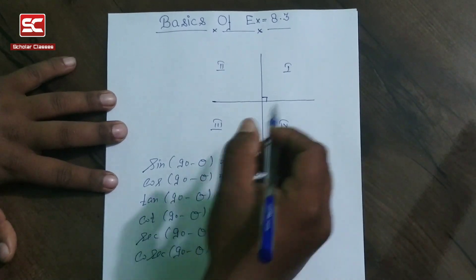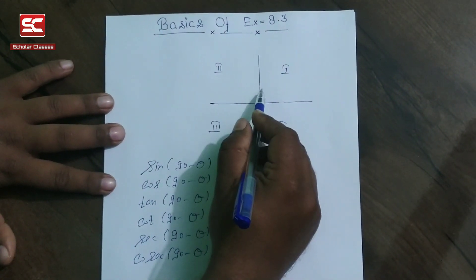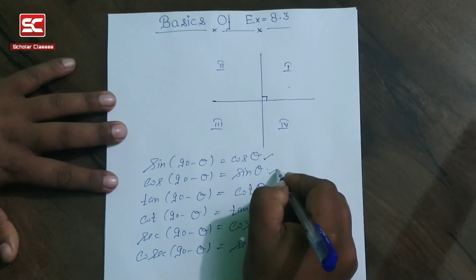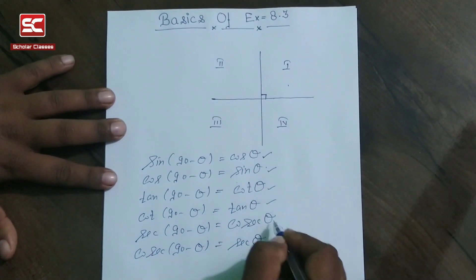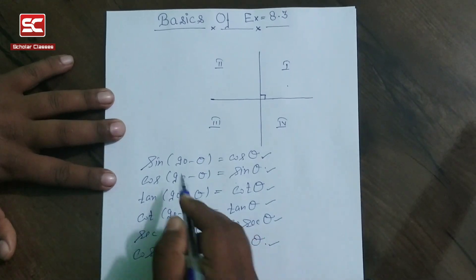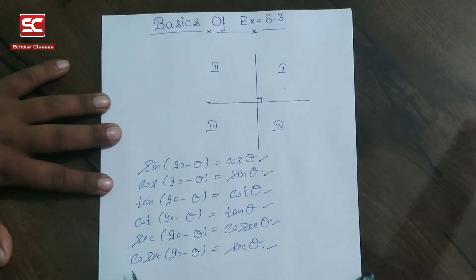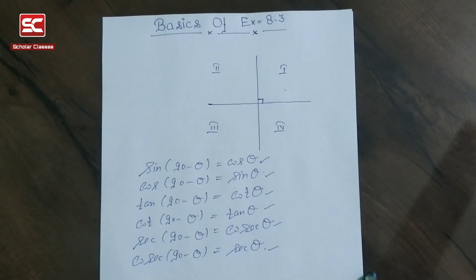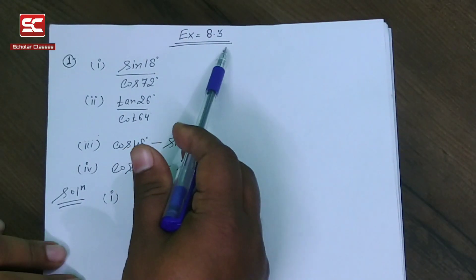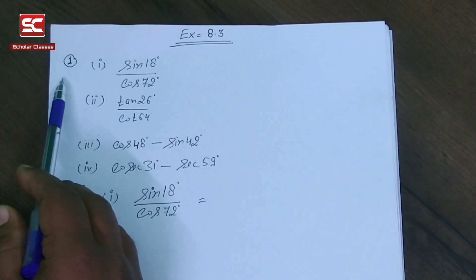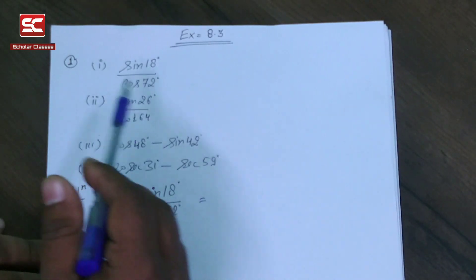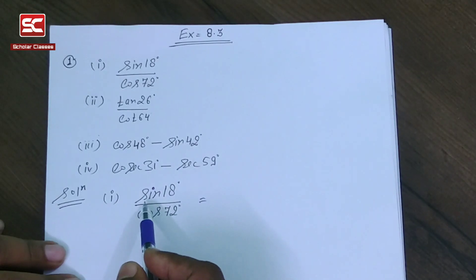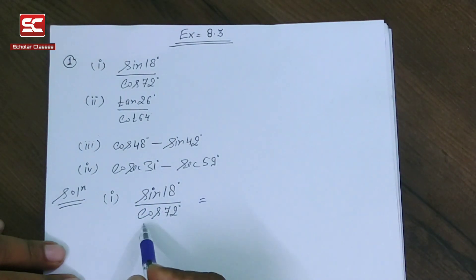We use these identities in Exercise 8.3. In question number one, it is divided into four parts. In the first part, we solve sin 18 divided by cos 72.